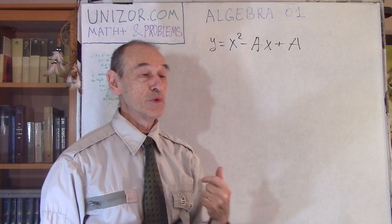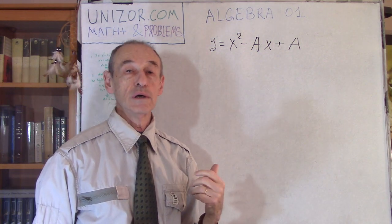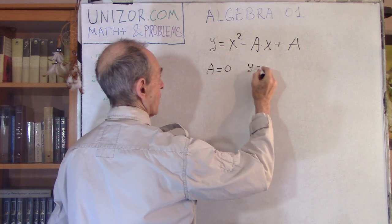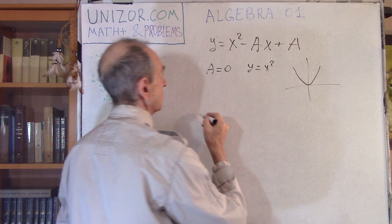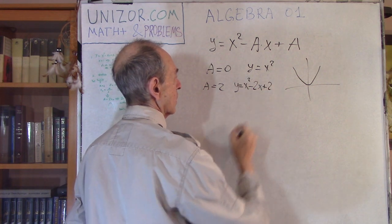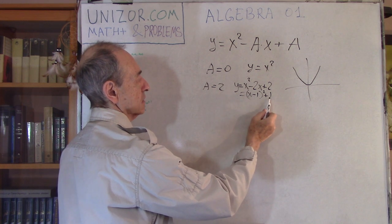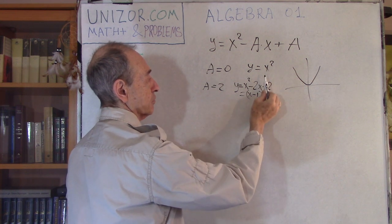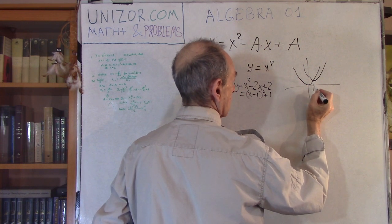Now, if you graph a few of these functions — representatives of this family — let's start with a equal to 0. We have a parabola. Now let's take a equal to 2. You have y equal to x squared minus 2x plus 2, which is the same as (x minus 1) squared plus 1. This is the same kind of parabola but shifted to the right by 1 and up by 1. So they are crossing at point (1, 1).